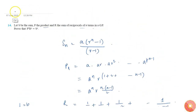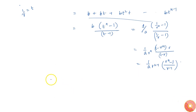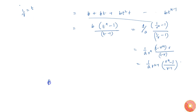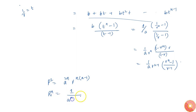We are asked to show that P squared times R power n equals S power n. P squared equals a power 2n times r power n(n minus 1), and R power n equals 1 by a power n times r power n(n minus 1) times r power n minus 1 divided by r minus 1, the whole raised to power n.